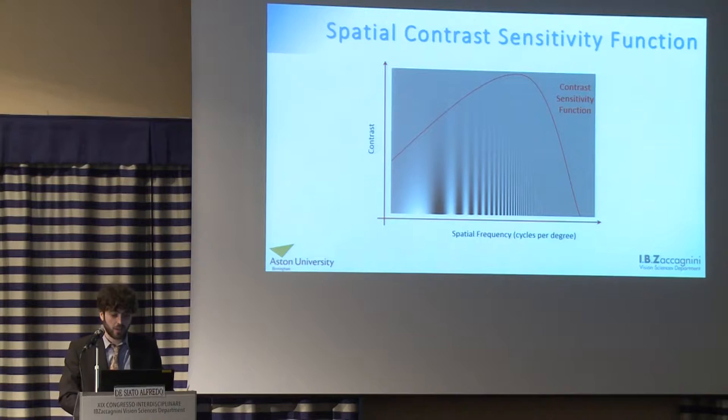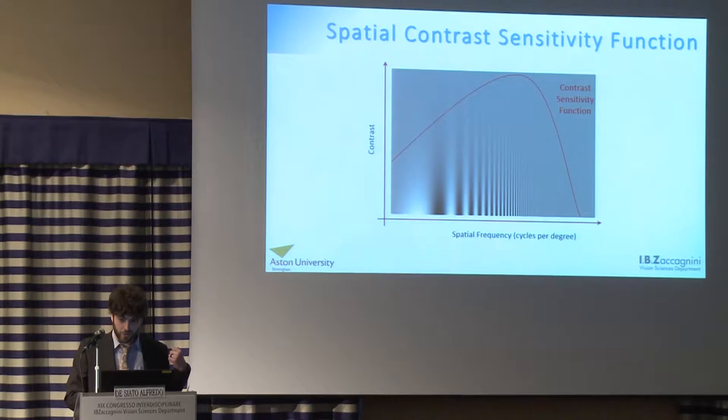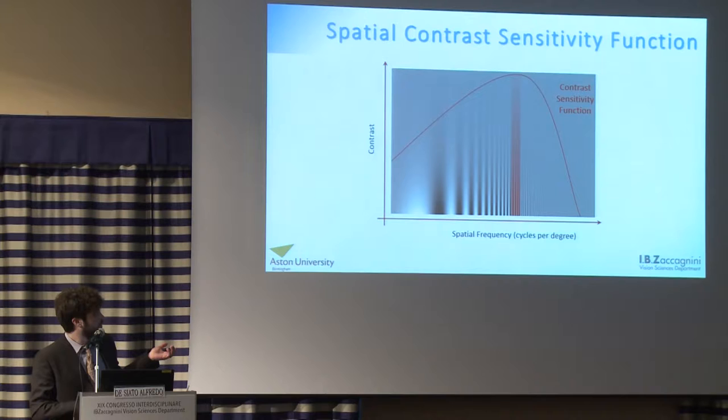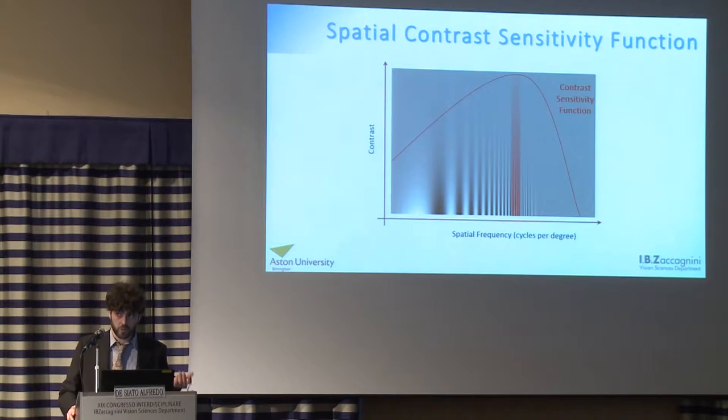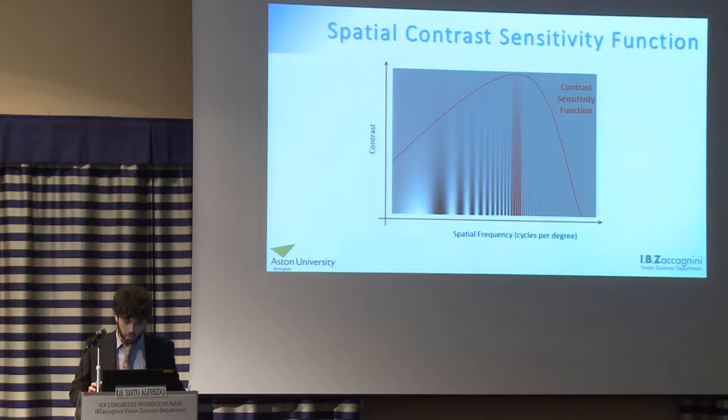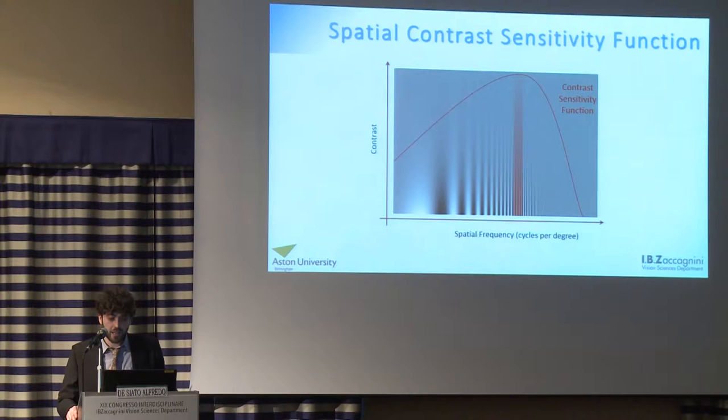The big idea behind this graph is that everyone can identify their contrast sensitivity as a function of spatial frequency. This is my contrast sensitivity function. There are several suggestions that on higher or lower spatial frequencies we can have the peak of contrast sensitivity, but we have our peak of contrast sensitivity in the middle range of spatial frequency. The images we have seen before are in the same range of spatial frequency.